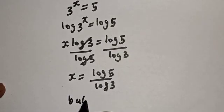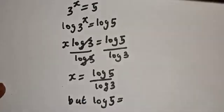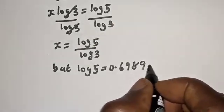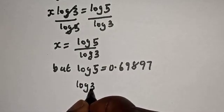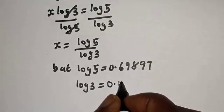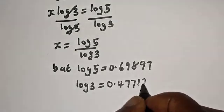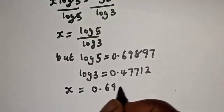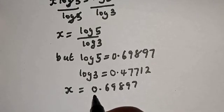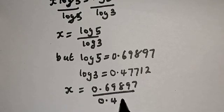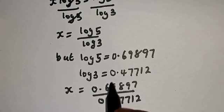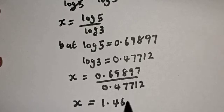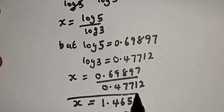Now, log 5 equals 0.69897 and log 3 equals 0.47712. So s equals 0.69897 divided by 0.47712. If you divide this, s equals 1.4650. This is the final answer.